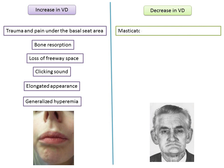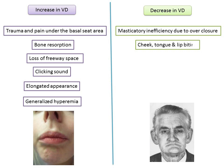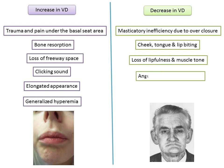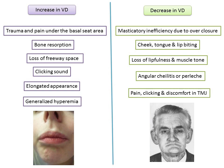Effects of decreased vertical dimension include: masticatory inefficiency, as the pressure possible to exert with teeth in contact decreases considerably with overclosure; loss of muscle tone and reduced vertical height; flabby cheeks becoming trapped between the teeth during mastication, leading to cheek, tongue, and lip biting; loss of lip fullness and muscle tone; angular cheilitis — a reduced vertical dimension creates a crease at the corners of the mouth beyond the vermilion border, which becomes bathed in saliva, leading to infection and soreness.